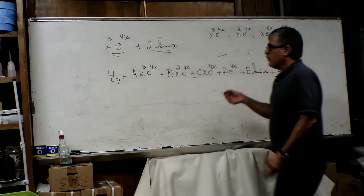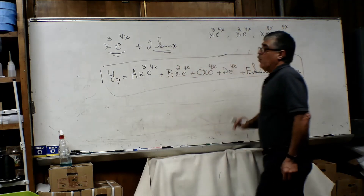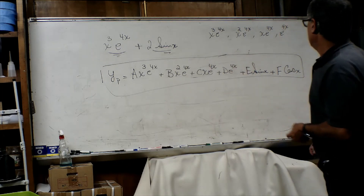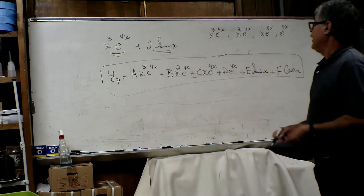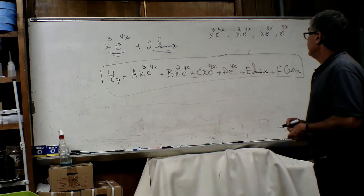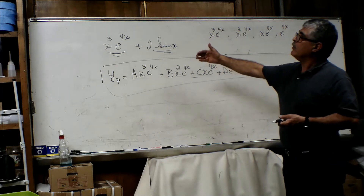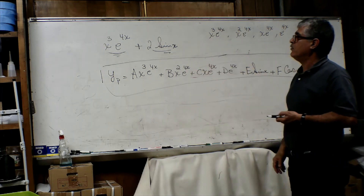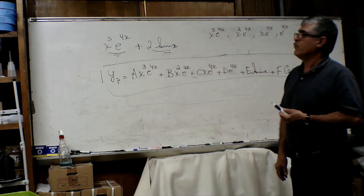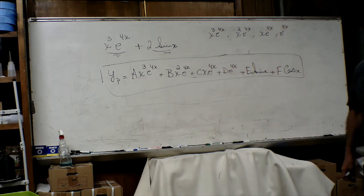So this is the particular solution we have to assume in order to solve that non-homogeneous differential equation. This is going to be a very long problem. But this is another good example of how to determine what to assume as a particular solution for a non-homogeneous higher-order differential equation. That's what we need to assume. See you.